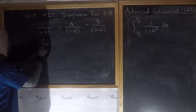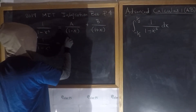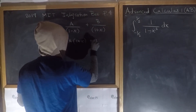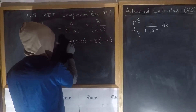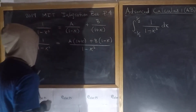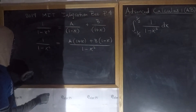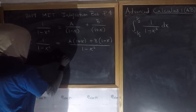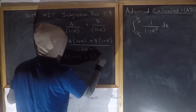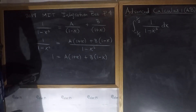This means that 1 over (1 minus x squared) equals, getting common denominators on the right-hand side: A times (1 plus x) plus B times (1 minus x), all divided by (1 plus x)(1 minus x), which we know as 1 minus x squared. Comparing both sides, the denominators are the same, so we conclude that 1 must equal A(1 plus x) plus B(1 minus x).